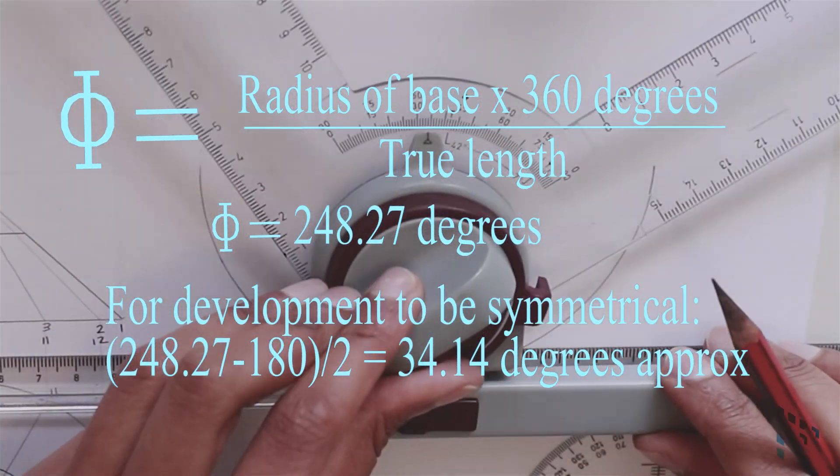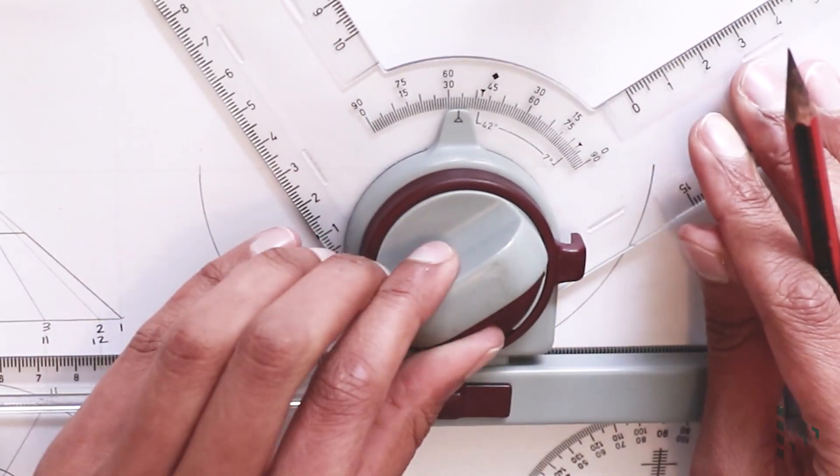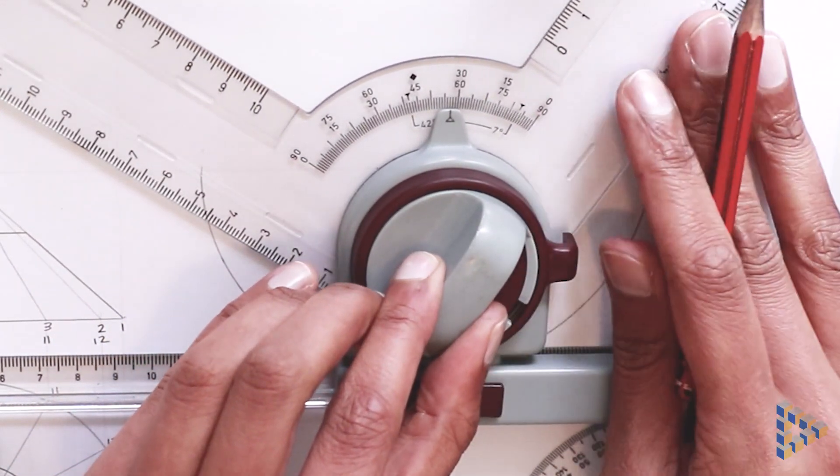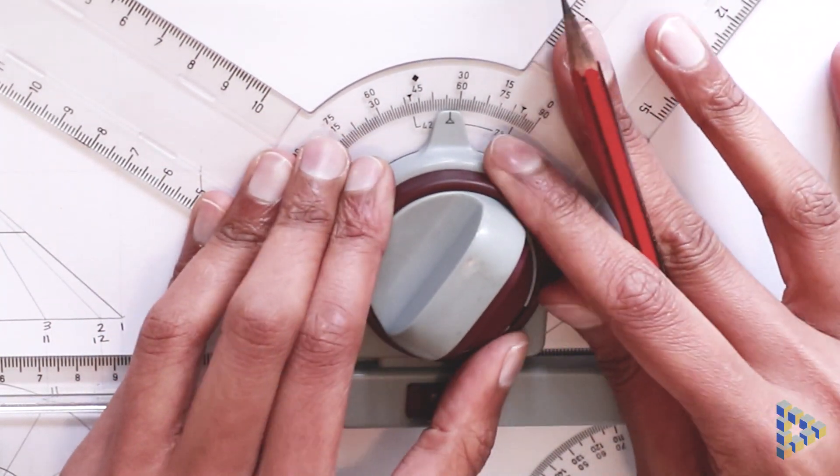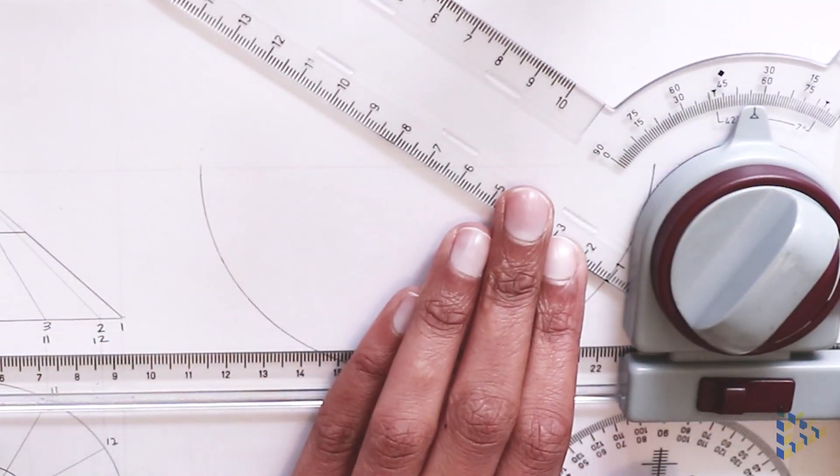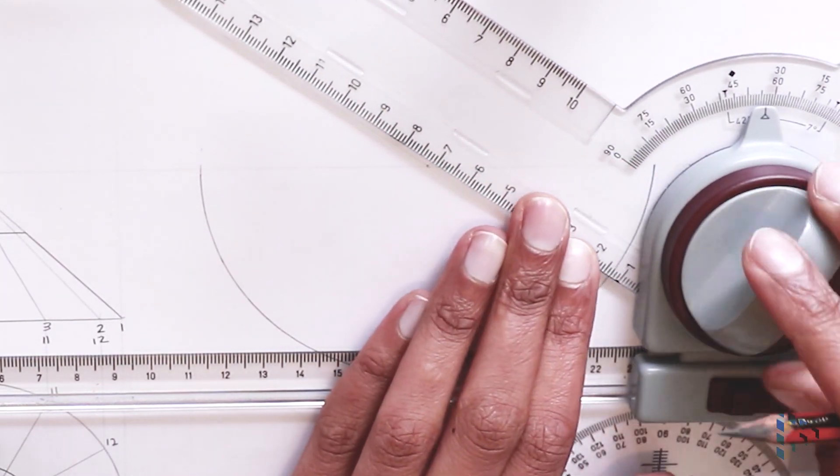If we want to make the drawing symmetrical, we can then subtract 248 by 180 and divide this by 2. We get the answer of approximately 34 degrees. This angle of 34 degrees is measured from the horizontal line and then the whole cone is drawn in.